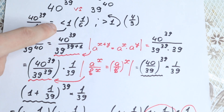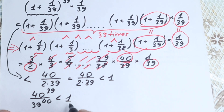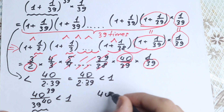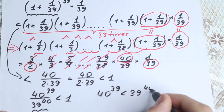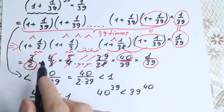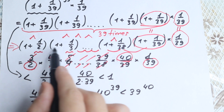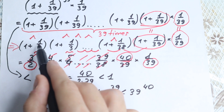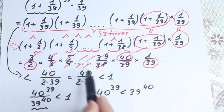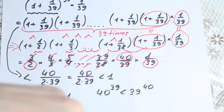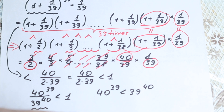So as I said before, if the fraction is less than 1, then the denominator is greater. Therefore, our final answer is: 40 to the power 39 is less than 39 to the power 40. Maybe a slightly complicated explanation, but the key step was comparing the two products of parentheses — the imaginary expression I constructed is greater than the original, yet still less than 1, so the original must also be less than 1. Thank you for your time, have a great day! If you want to support me, please leave a like below the video. I definitely wish you all the best in your math adventure — see you in the next videos!